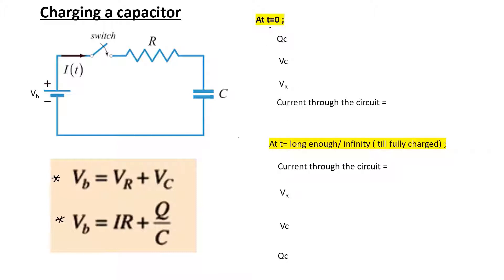At T equals 0 - T equals 0 means the moment I close the circuit. At that moment, is my capacitor charged? No. I haven't even started charging the capacitor. We connected a capacitor which is not charged, so the moment I close the switch, it is still not charged. At T equals 0, the charge in my capacitor is 0. That is the starting point - if you figure this out, all the things become very easy.